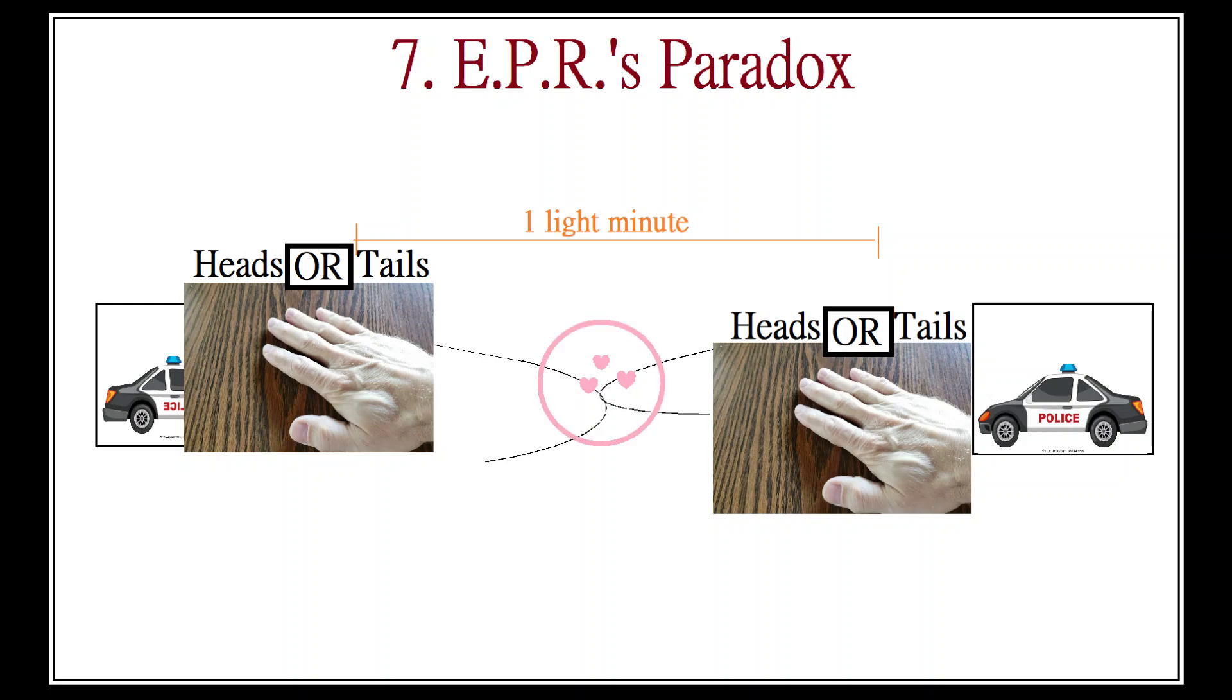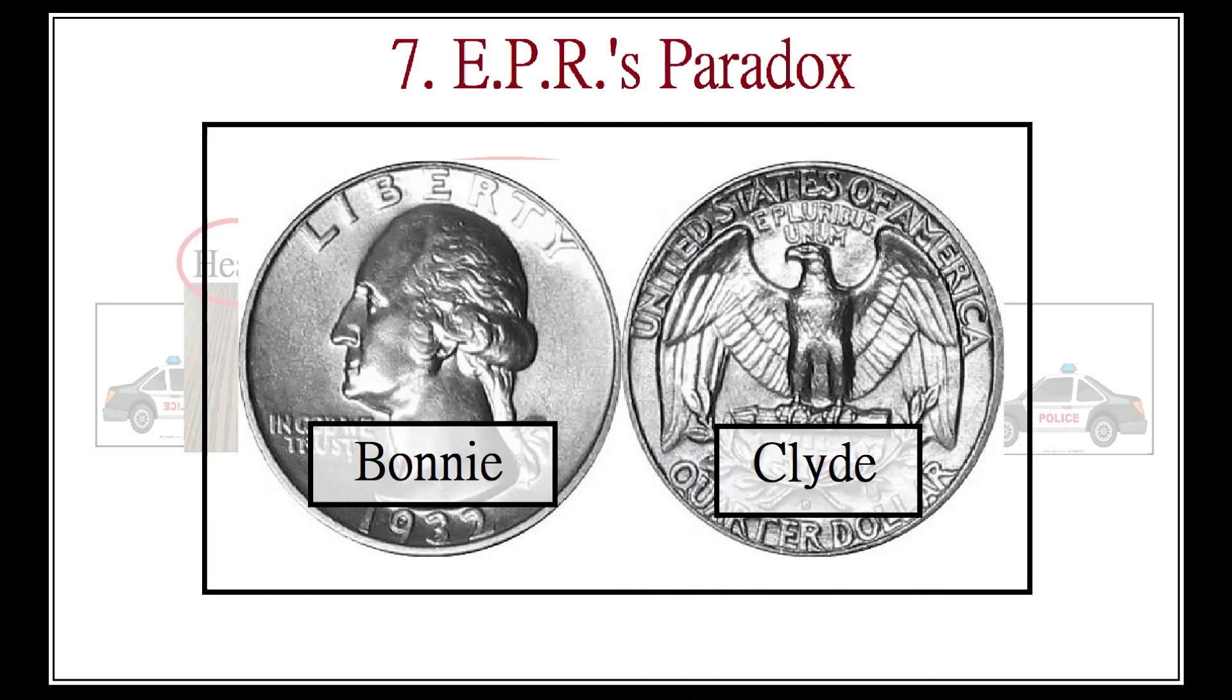The trouble is, due to the entanglement, Bonnie and Clyde are two halves of a pair. So when we determine Bonnie's value, what happens to Clyde's value? Remember, the two particles must conserve the total energy of the system, meaning you can't have an entangled pair that shares the same value in a given property. Here on the quantum level it makes a little more sense. For instance, if Bonnie has the property spin up, then Clyde must have the opposite property of spin down, or the principle of conservation will be violated.